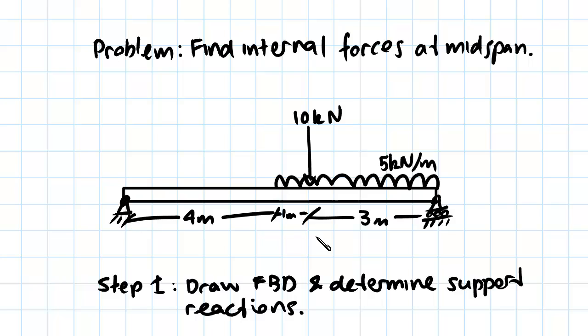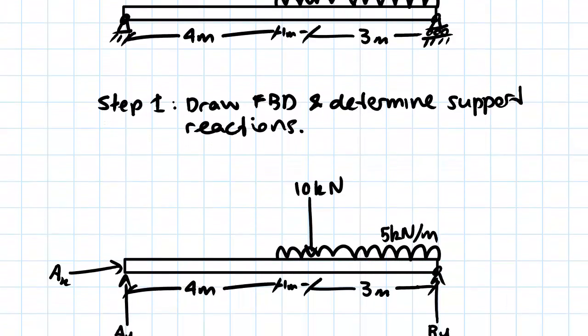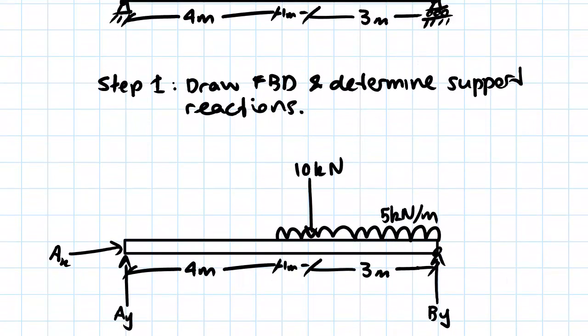So our first step as always is going to be to draw our free body diagram and determine our support reactions. The way we do that is we draw in the forces that we know - our 10 kN point load and our 5 kN per meter UDL, and we draw in our measurements as well as our support reactions.